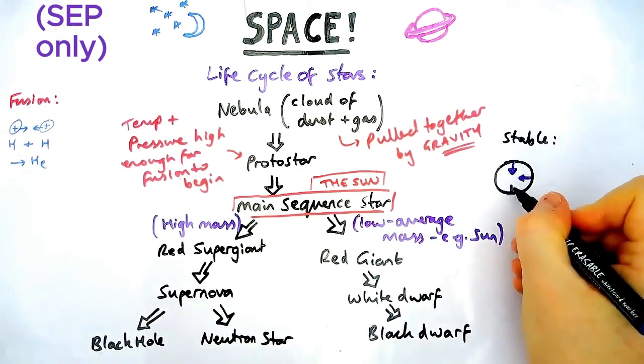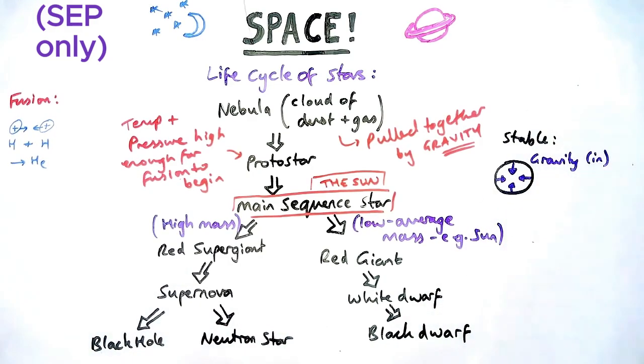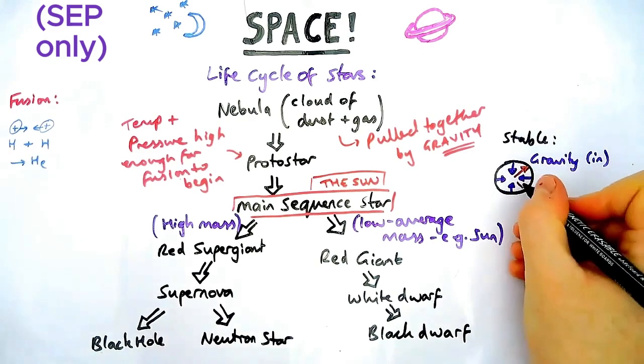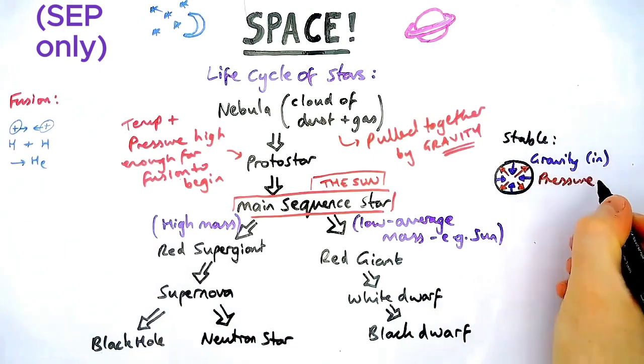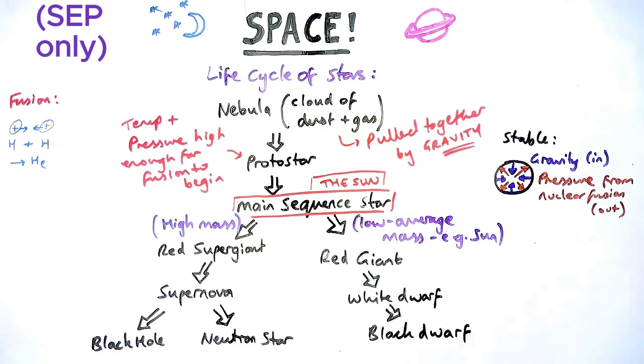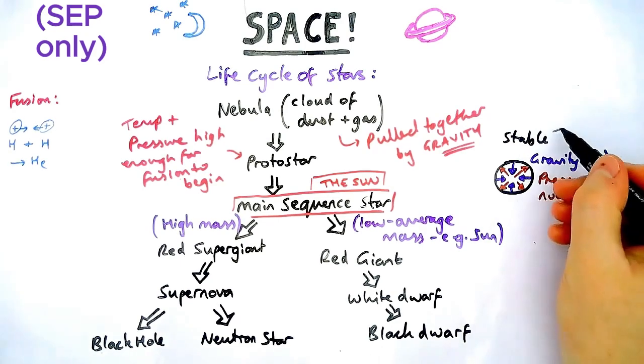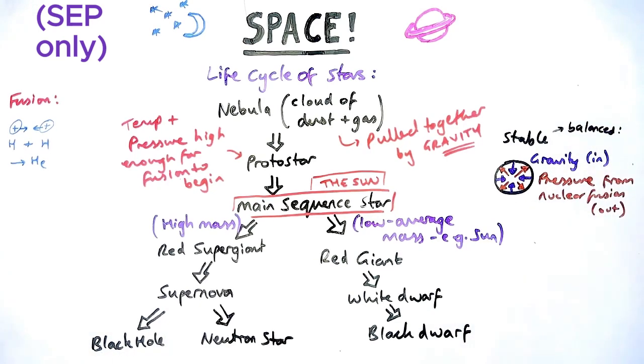So the forces that are going inwards are gravity, gravity pulling everything inwards. The forces outwards are a bit trickier to describe, but they are caused by the thing we just talked about, nuclear fusion. Nuclear fusion releasing energy. And you'd say a phrase like pressure from nuclear fusion. Different exam mark schemes and exam boards have slightly different phrases for it, but that's the force that's pushing outwards on the star. Now if those forces are equal or balanced, then the star stays the same. Basically, that's why our Sun doesn't change day on day. It doesn't get bigger or smaller.